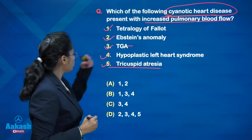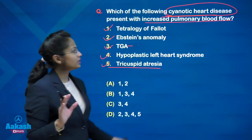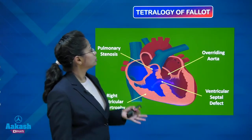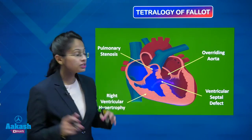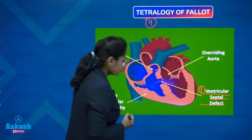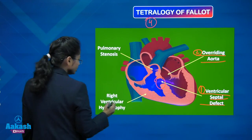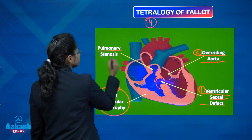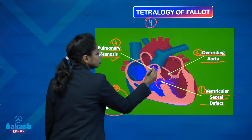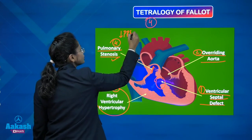The options are: Tetralogy of Fallot, Ebstein anomaly, TGA (transposition of great arteries), hypoplastic left heart syndrome, and tricuspid atresia. All these options are cyanotic heart diseases. In Tetralogy of Fallot, the four components are ventricular septal defect, overriding of the aorta, right ventricular hypertrophy, and pulmonary stenosis. Because of pulmonary stenosis, the pulmonary blood flow is decreased — so TOF is associated with decreased pulmonary blood flow.